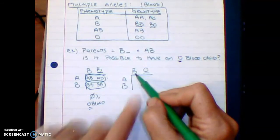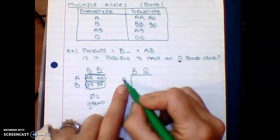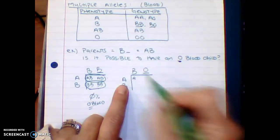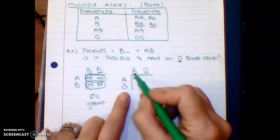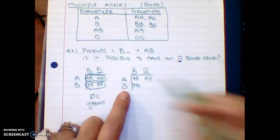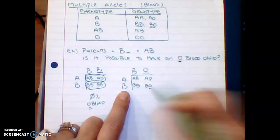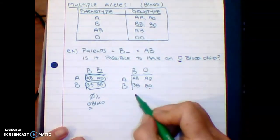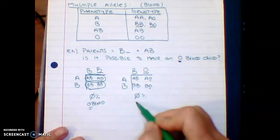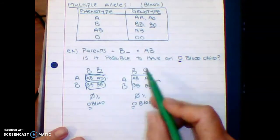Now what happens if dad over here was BO? Do we have a chance to create an O child? So again, bring in the A, so A always goes first, and then B. Drop down the B, bring over the B, bring over the AO. So O always goes second because it's recessive, and then bring over the B and then the O. So in this particular case, you have 0% chance of an O blood baby.